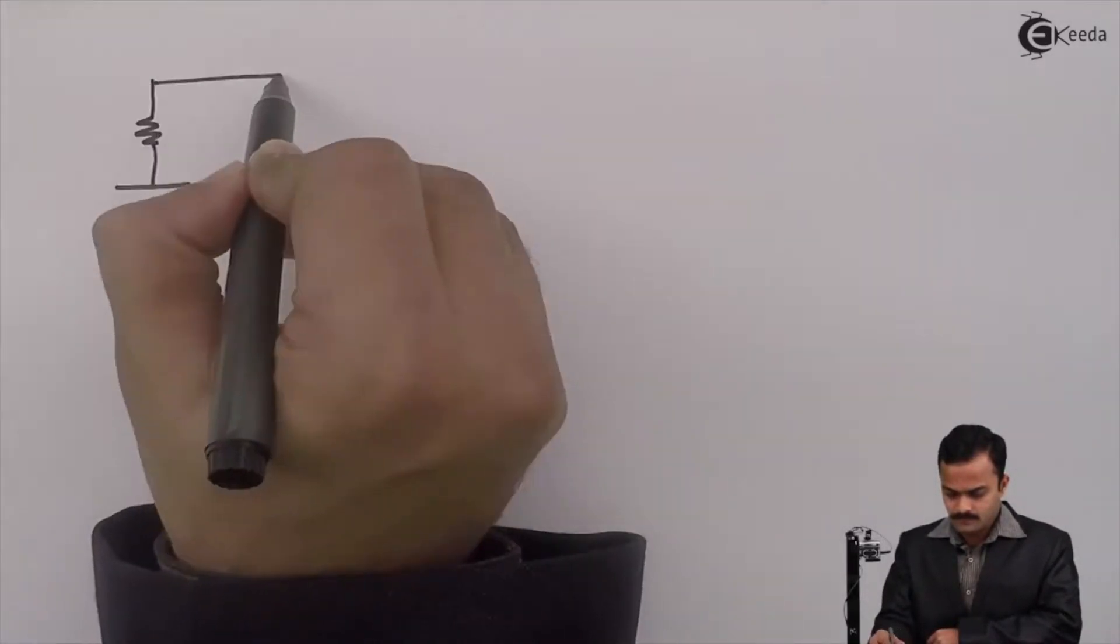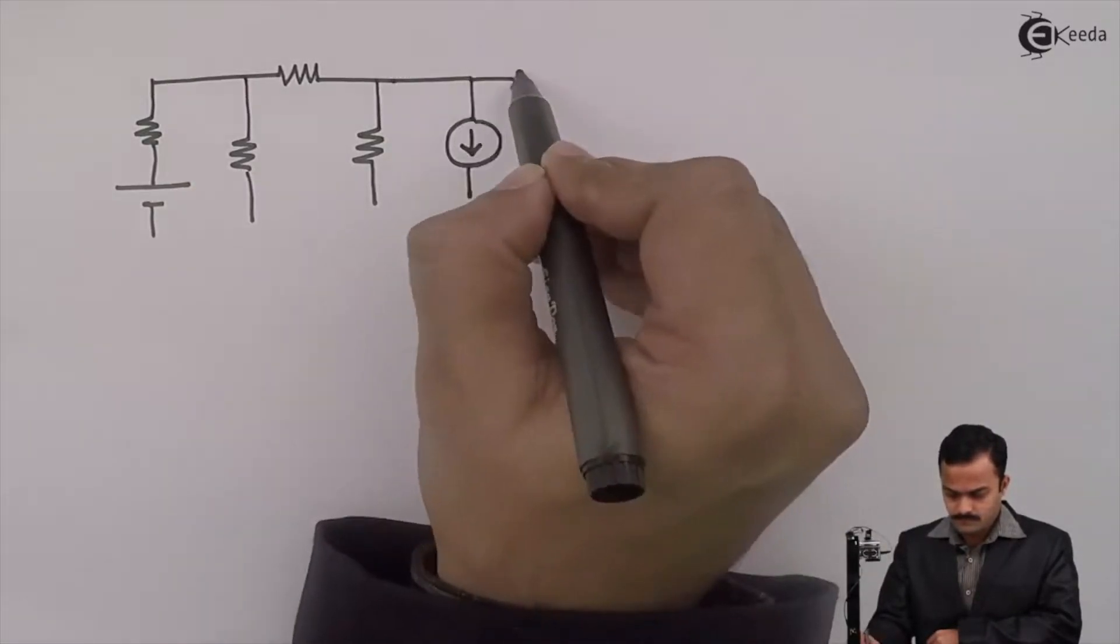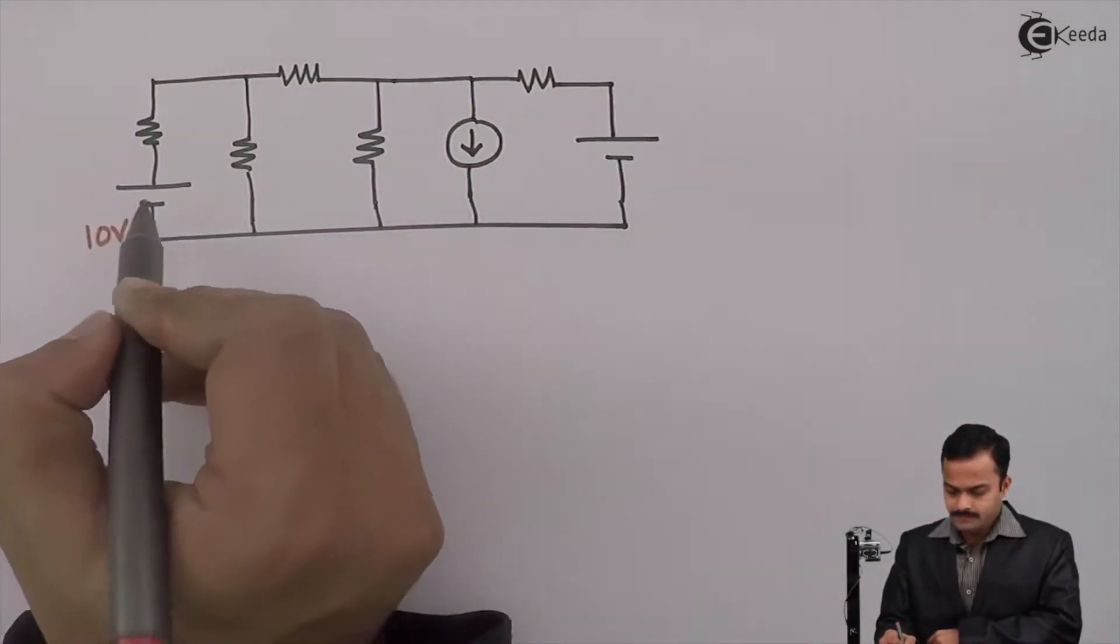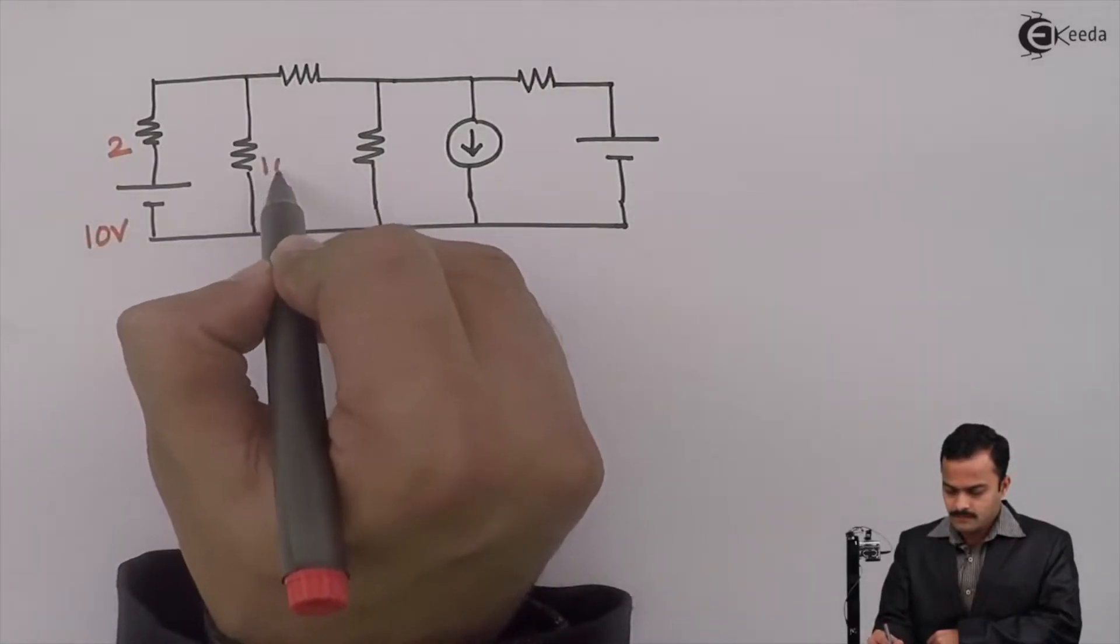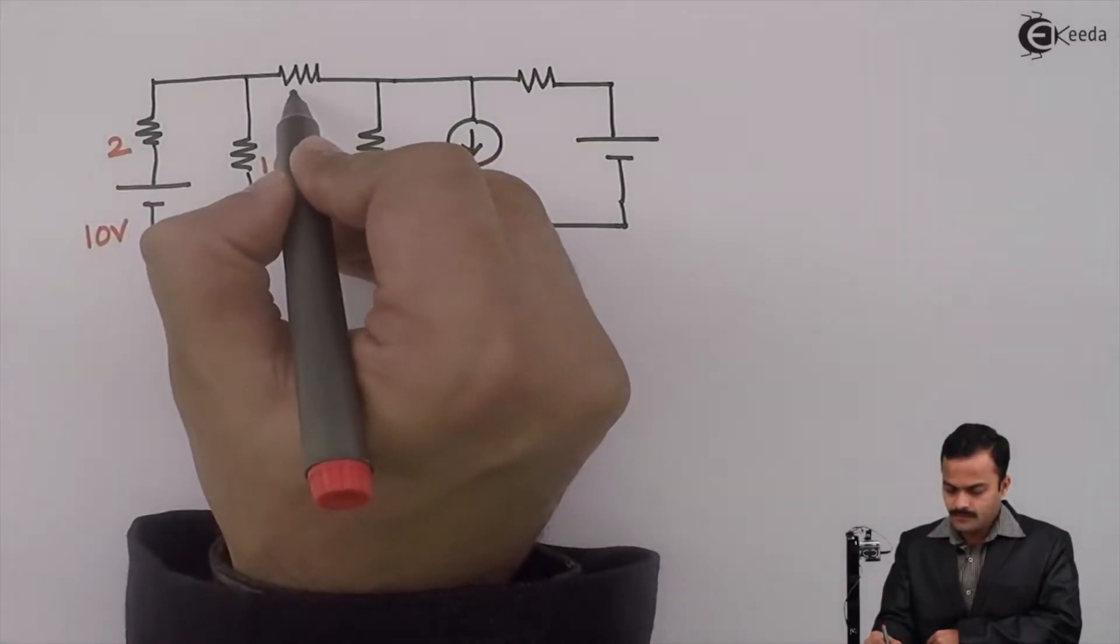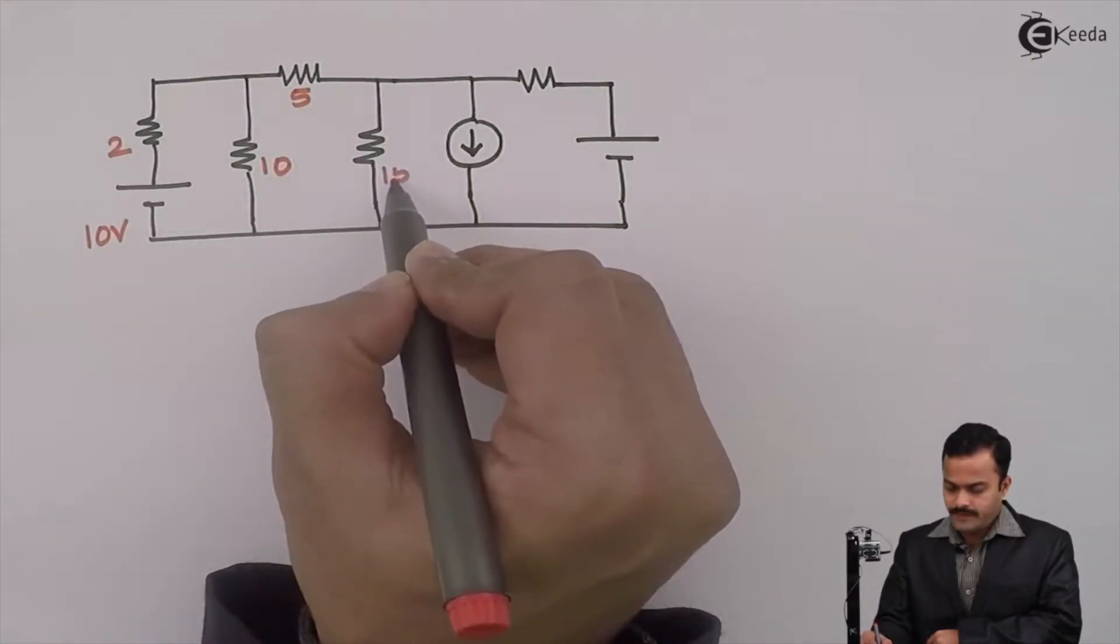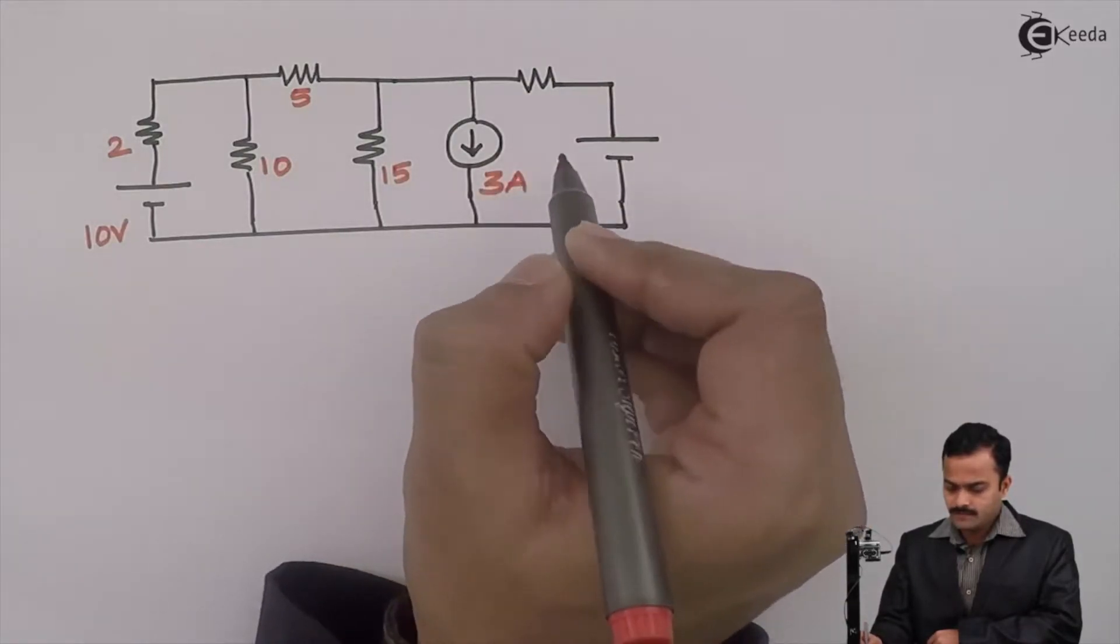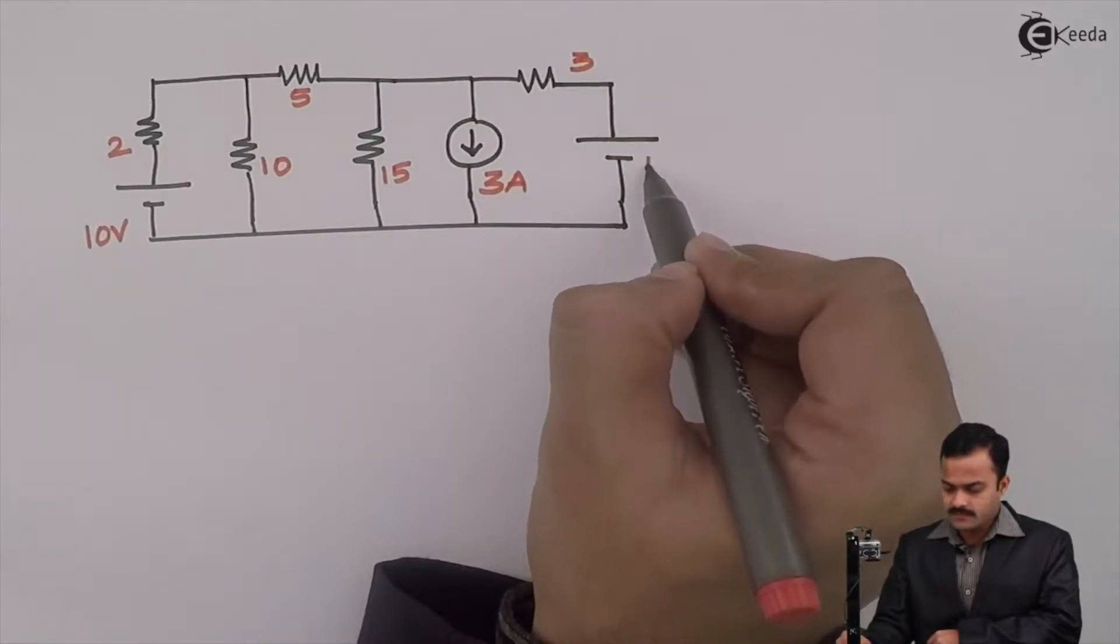So let's take a numerical. 10 volt battery, this is 2 ohm resistance, 10 ohm, 5, 15, this is 3 ampere current source, 3 ohm resistance connected in series with 18 volt.